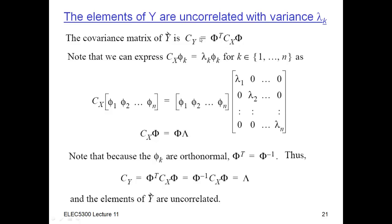To show that the Y's are uncorrelated, the covariance matrix of Y should be diagonal. The eigenvectors satisfy the eigenvector equation for each k, and we can express this as one big matrix equation by applying it to each column of Φ. So applying C_X to Φ gives a matrix where each column is λ_k times φ_k — this is a compact way of expressing all those conditions in one matrix equation: C_X · Φ = Φ · Λ.